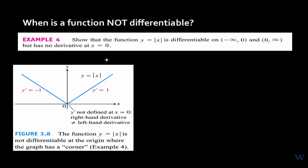When is a function not differentiable? Example four asks us to show that the absolute value of x has no derivative at x equals zero. From the graph, to the left of zero the slope of the tangent line is negative one, and to the right of zero the slope is one. So y prime is not defined at x equals zero.